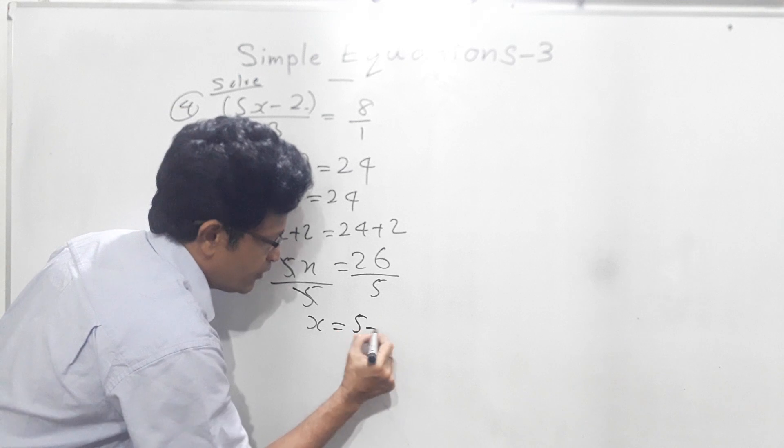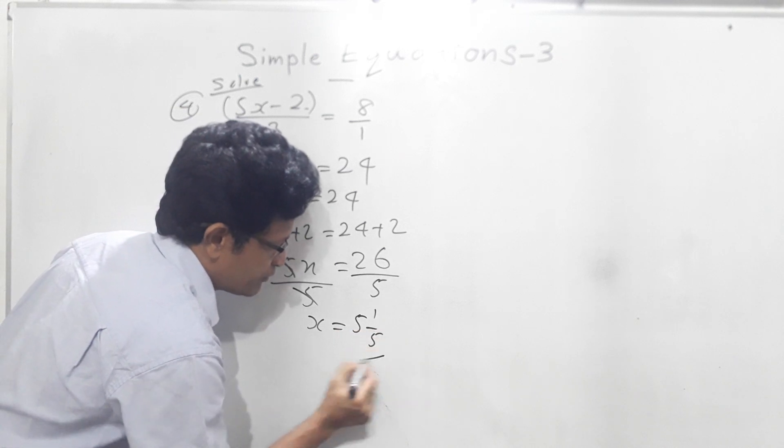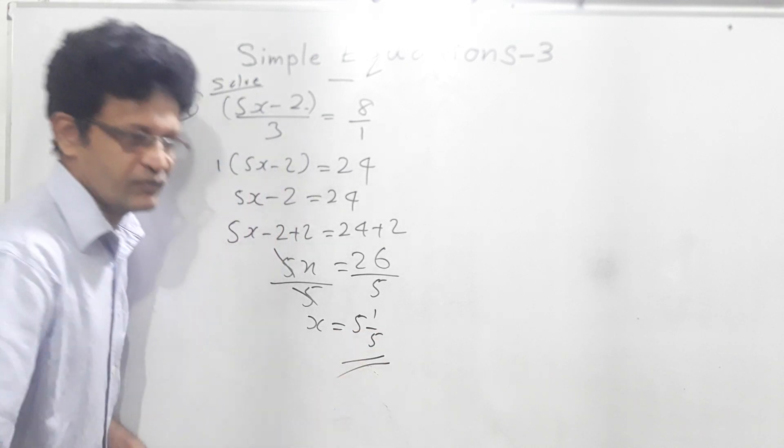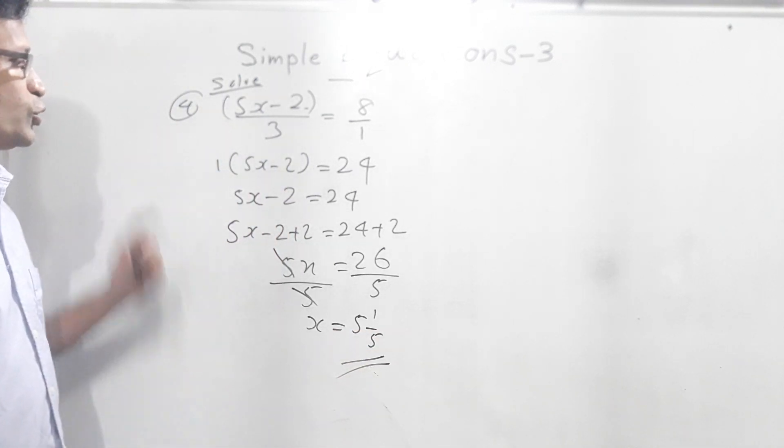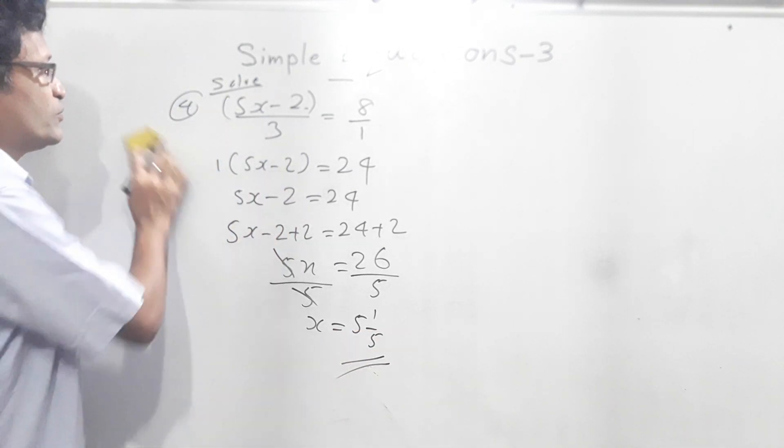x equals 26 divided by 5, that means 5 and one fifth. Okay, right. The 4th question we did.